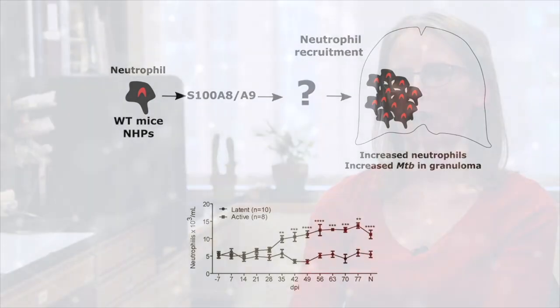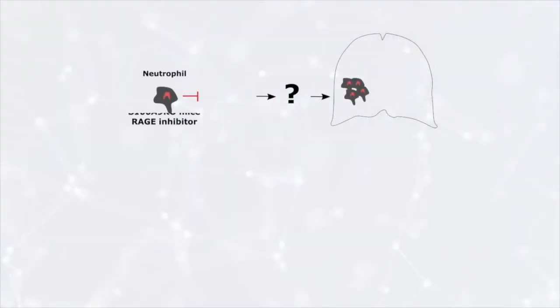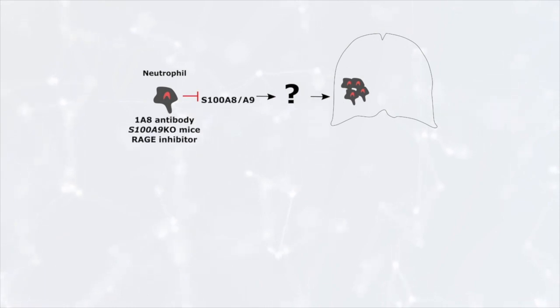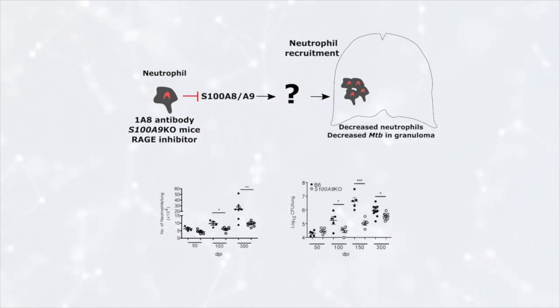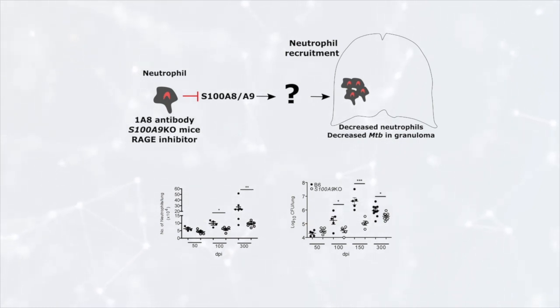The alarmin S100A8 and A9 heterodimer, which is also called calprotectin, constitutes a major component of neutrophil content. In our study, we addressed whether the S100A8 and A9 heterodimer plays a functional role in neutrophil recruitment during TB.